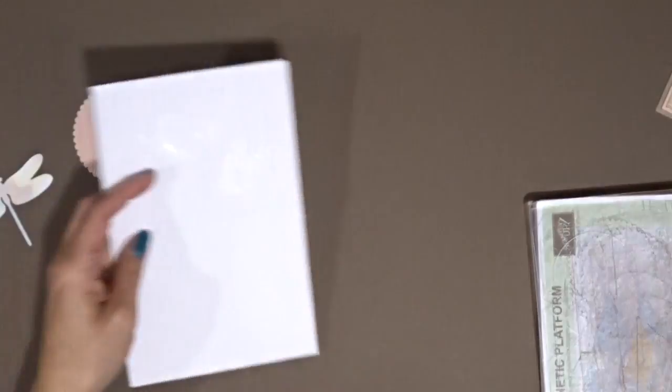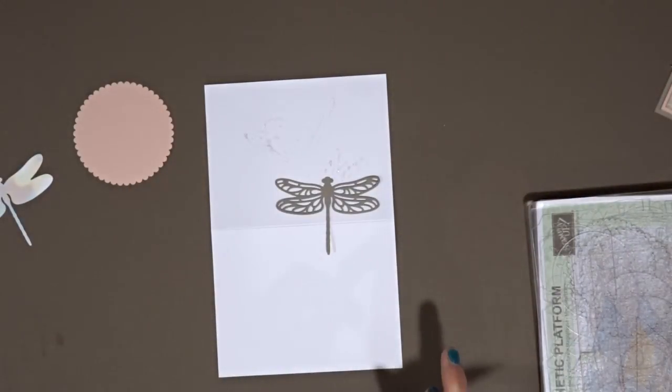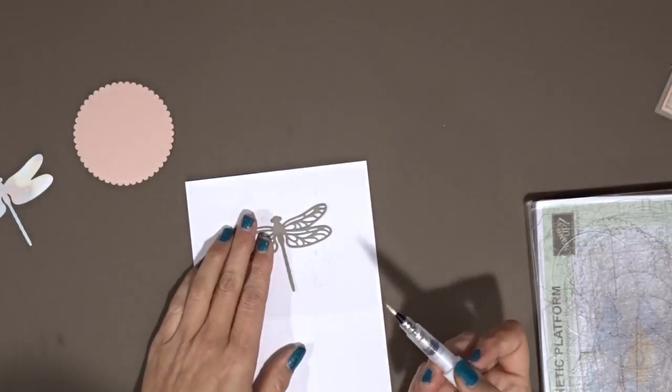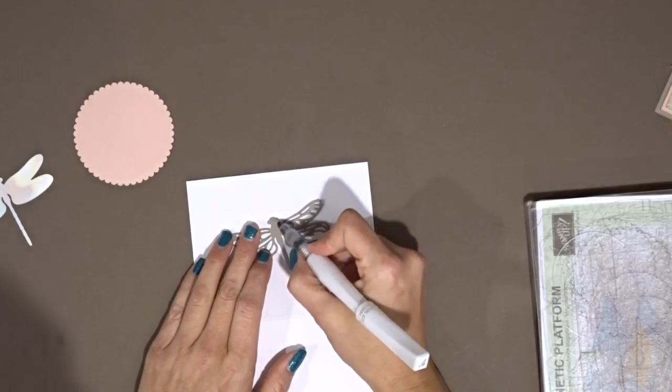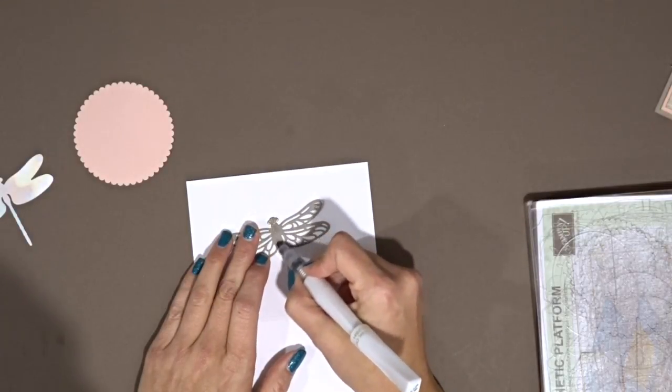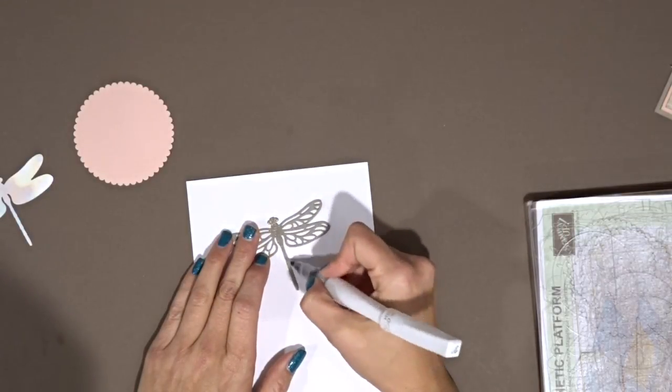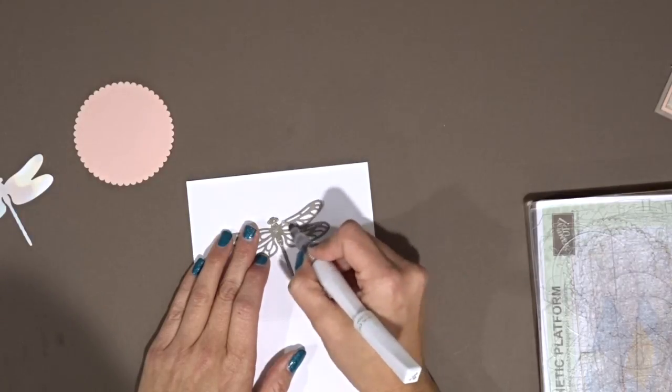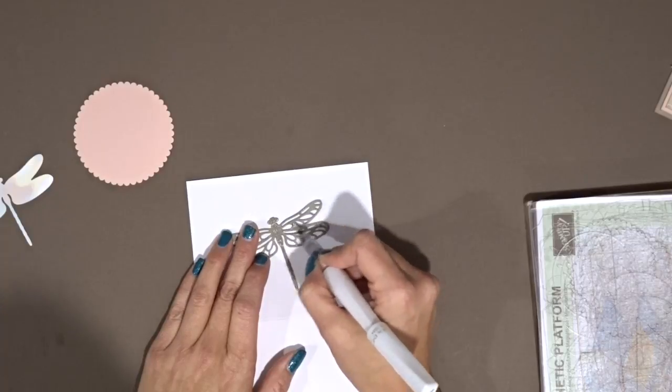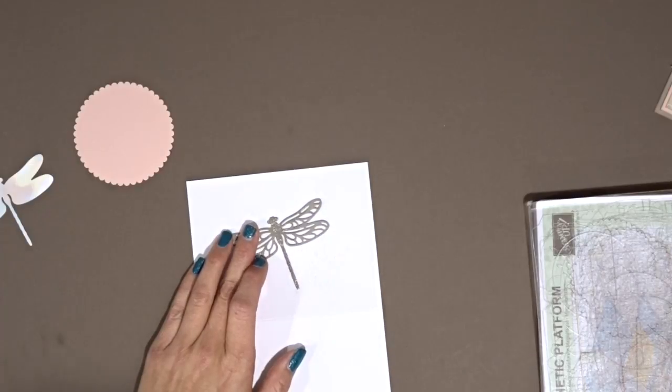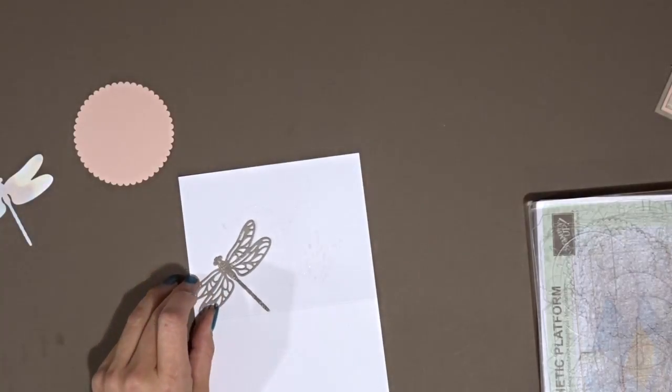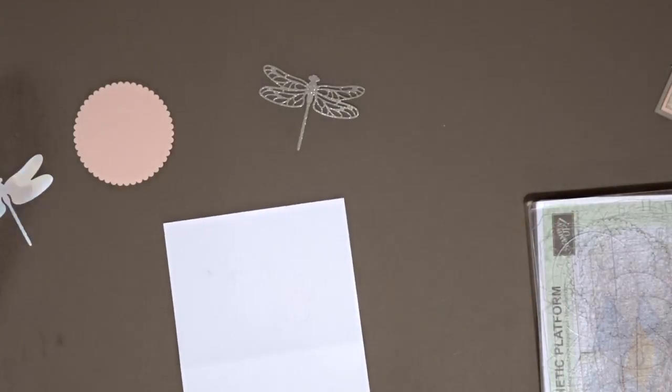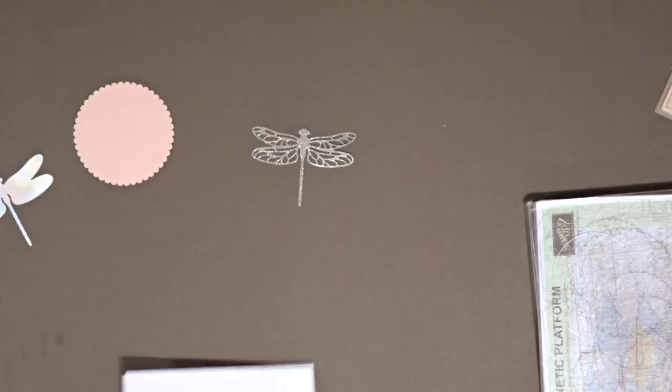Now what we're going to do is I'm going to take this dragonfly and using my favorite go-to, we're just going to use this clear wink of Stella. And we're going to color over very quickly the entire dragonfly. So you'll just go over it like that and when you're done it is going to look like that, all nice and shiny and sparkly.